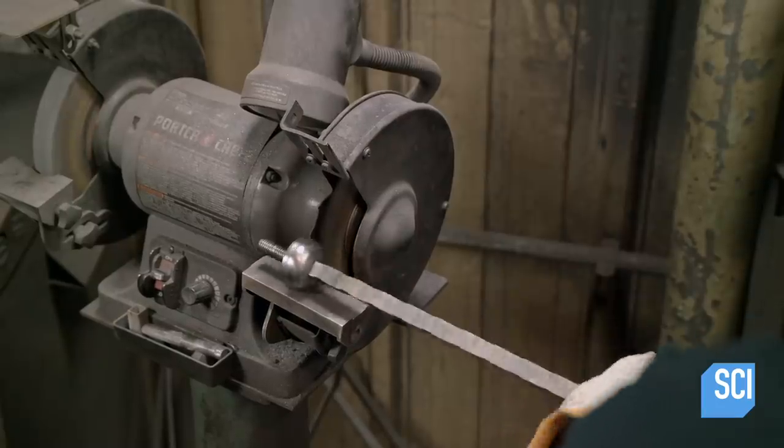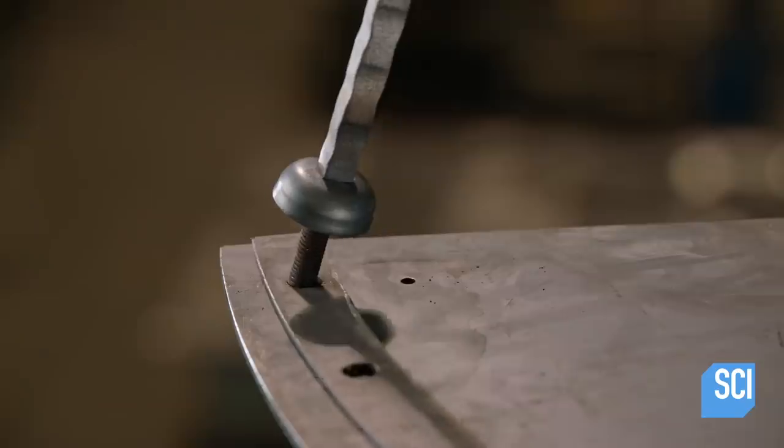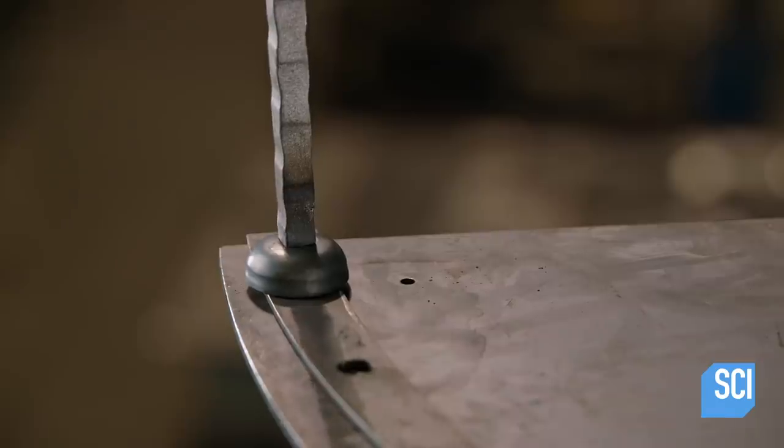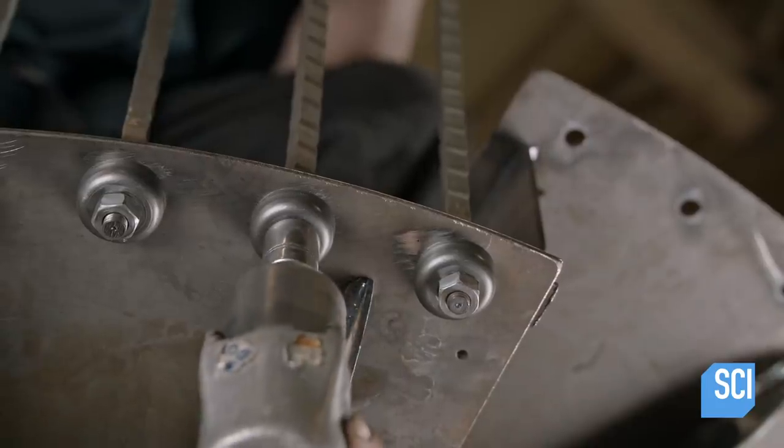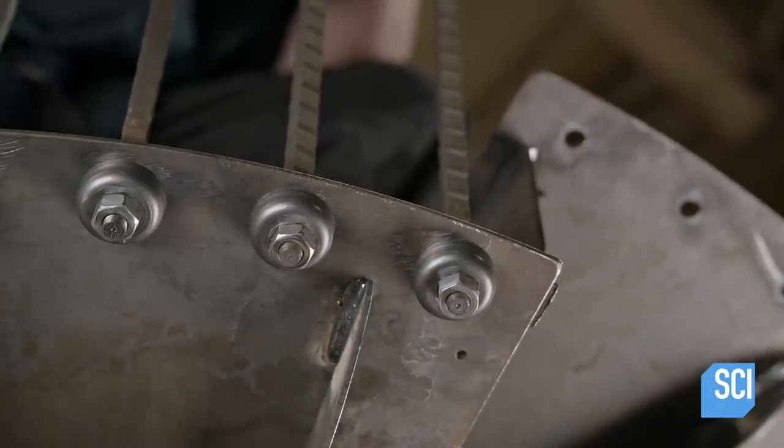He grinds the weld scale from the cup. He inserts the baluster through holes in a metal spacer and the tread. He screws a nut onto the end to secure it.